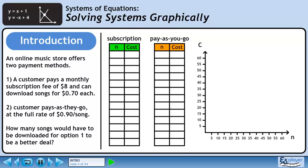The graph for this data will have the number of songs on the x-axis and the cost on the y-axis. It's a good idea to also write down the equations that represent each line. In the subscription option, there is a fixed cost of $8 and each song costs $0.70. This is represented by the equation C equals 0.70n plus 8. In the pay-as-you-go option, there is no fixed cost and each song costs $0.90. This gives us the equation C equals 0.90n.